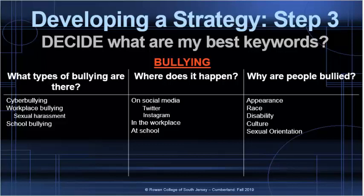So what are some places where bullying happens? In the case of cyberbullying, it might happen on social media. If we break it down further, we can say things like Facebook, Twitter, or Instagram. As far as in schools, we can look at high schools, elementary schools, middle schools, or colleges.